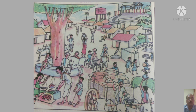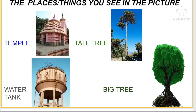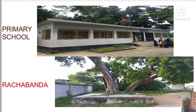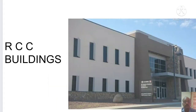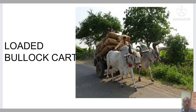Now I will present you some of the places, things and persons. The places and things are, for example: water tank, tall tree, big tree. The places: primary school, rachabanda, kaccha houses, RCC buildings, loaded bullock cart.